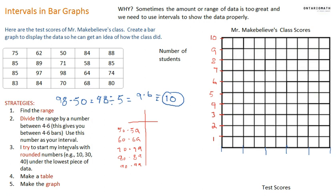So, I'm going to try to start my intervals with rounded numbers. So for example, 10, 30, 40, something ends with 0, under the lowest piece of data. The lowest piece of data is 50. I'm going to start with a rounded number. Oh, but wait, it already is 50. It's a nice round number. But say it was 51, I would have probably started at 50 anyways, just to make it easier to count by. So, here it is. I write 50.